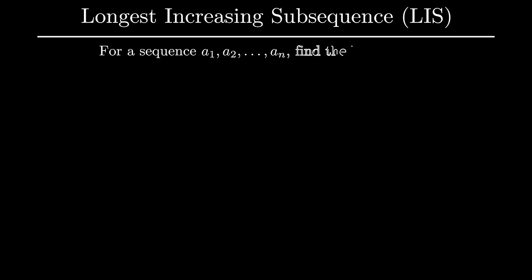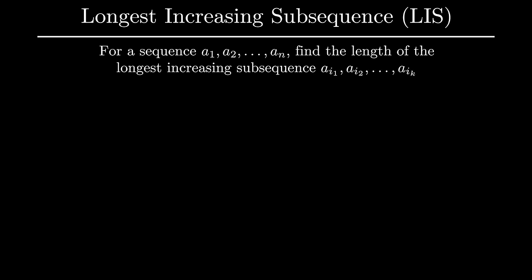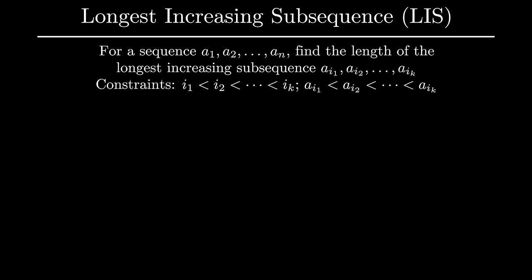The first example we'll look at is the longest increasing subsequence problem. You're given a sequence of n elements, and you want to find the length of the longest increasing subsequence. An increasing subsequence is a sequence of elements where each subsequent element has both a larger value and index than the previous element. Given a sample sequence, the longest increasing subsequence is 1, 2, 5, with a total length of 3.